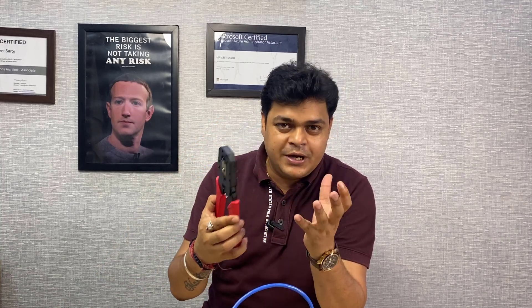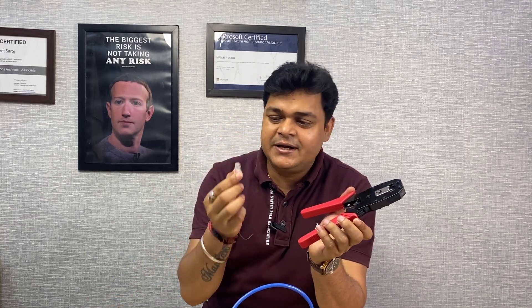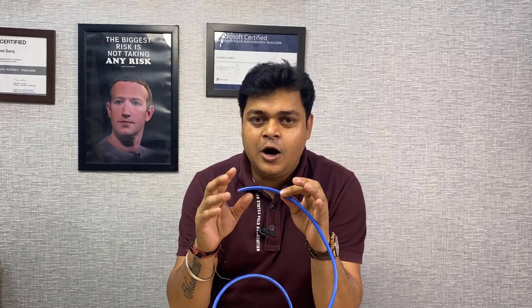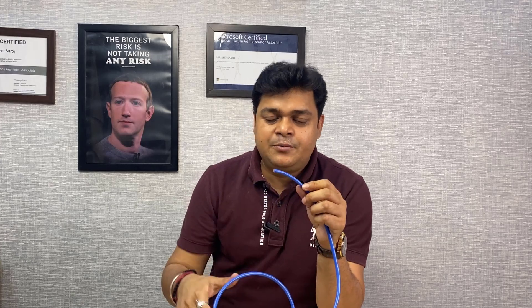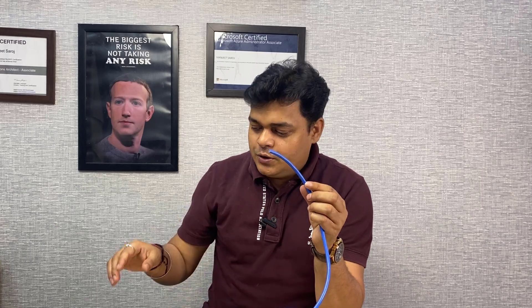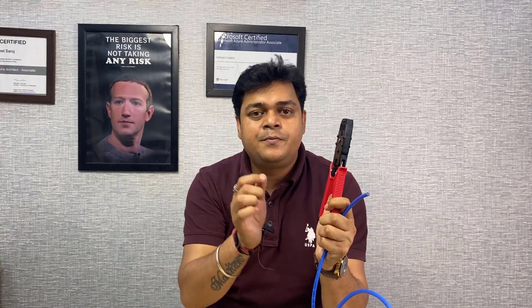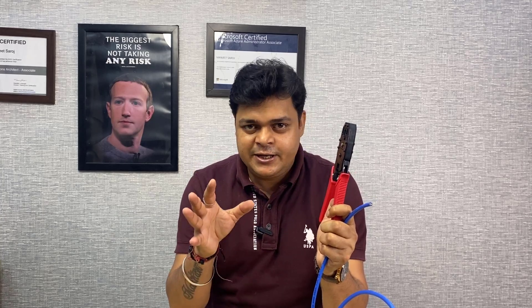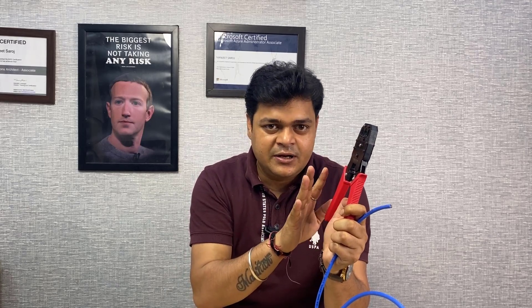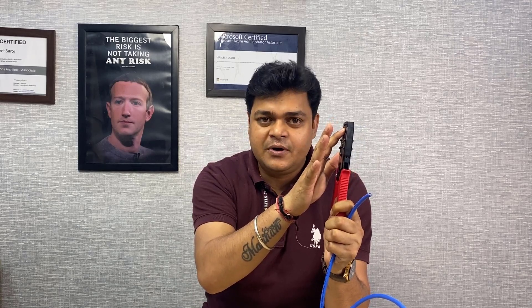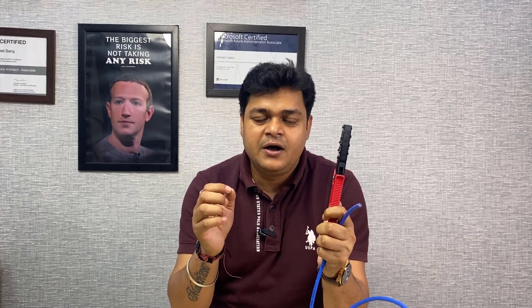The prerequisites are: you must need one crimping tool — this is the crimping tool that will help us to create the cable. The second important part is the RJ45 connector, which contains eight pins — four pairs, eight pins, and eight different wires available in our UTP cable. In the crimping tool, three different types of RJ connectors are available: one is for RJ45, another for RJ11, and the last one is related to telephone wire connectivity.